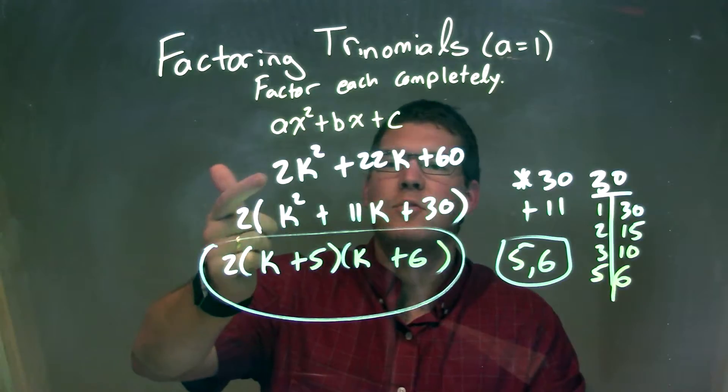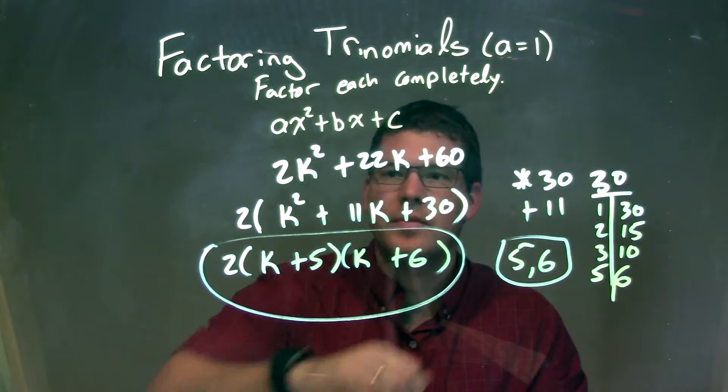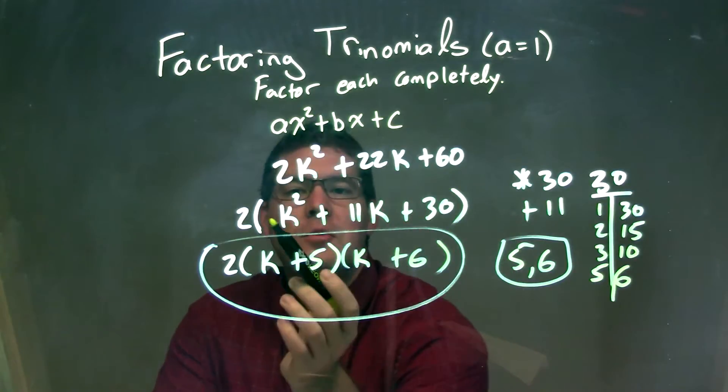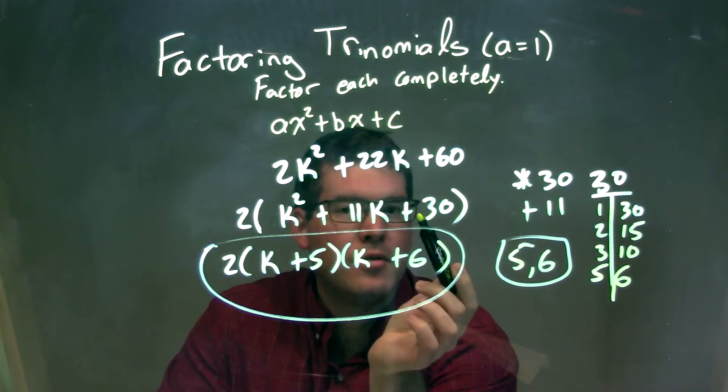So let's recap. We're given 2k squared plus 22k plus 60. I needed to factor that. I saw 2 was in all parts, so I pulled a 2 out and was left with 2 times k squared plus 11k plus 30.